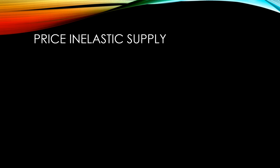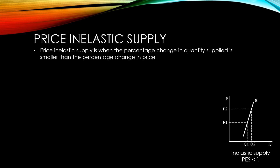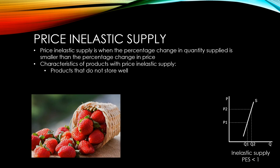Price inelastic supply is when the percentage change in quantity supplied is smaller than the percentage change in price. Products with inelastic supply are likely to have certain characteristics. If products don't store well, it is much harder to increase supply when the price increases. Similarly, if the price goes down for these goods, you can't just take them out of the market and wait to sell them later.